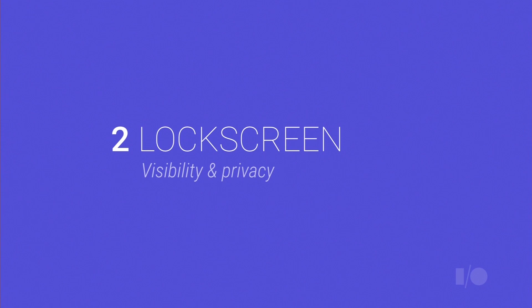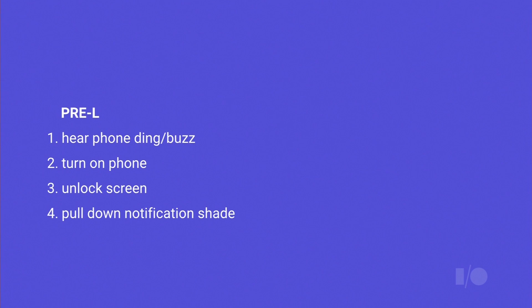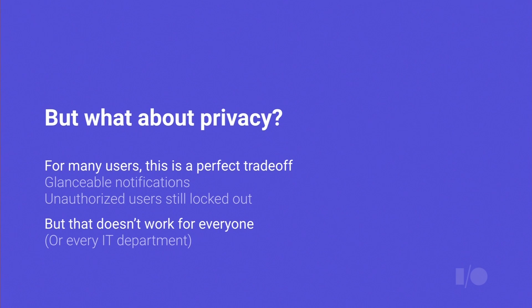Lock screen notifications are a big part of L. We now show your notifications right on the lock screen — it's completely glanceable for everyone on an L device. Pre-L, the workflow was: hear buzz, take out phone, turn on, unlock screen, pull down notification shade. By then you've forgotten what you came for. In L, you hear the buzz, take out the phone, turn it on, and it's right there. But what about privacy?